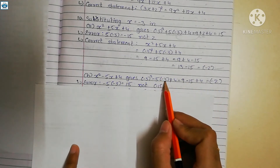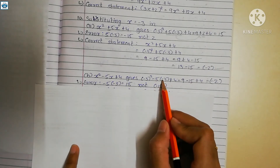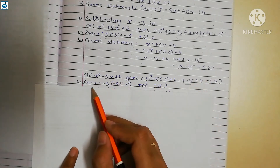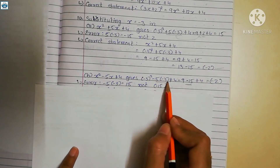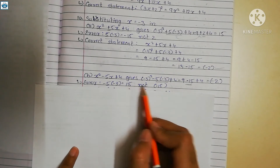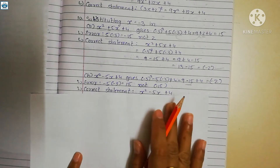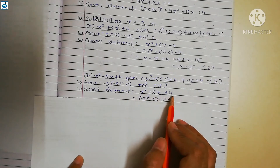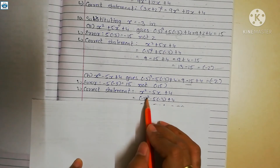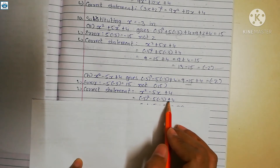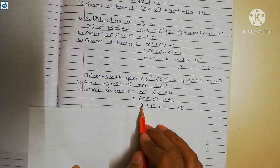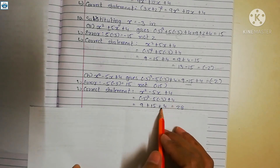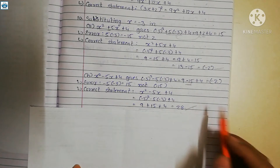Further clarifying the error in the second substitution problem: minus 5 into minus 3 equals plus 15, not minus 15. The correct statement is x squared minus 5x plus 4 evaluated at x equals minus 3 gives minus 3 squared minus 5 times minus 3 plus 4, which equals 9 plus 15 plus 4, and the answer becomes 28.